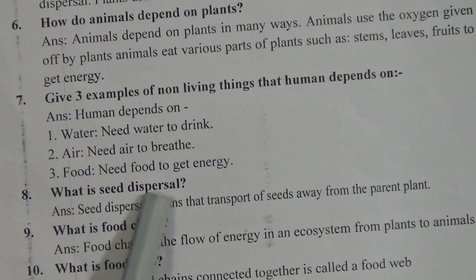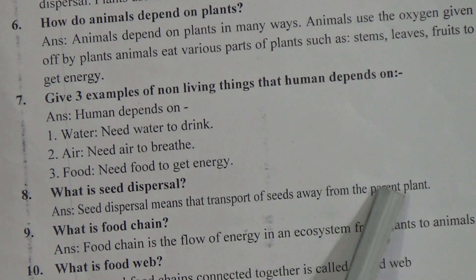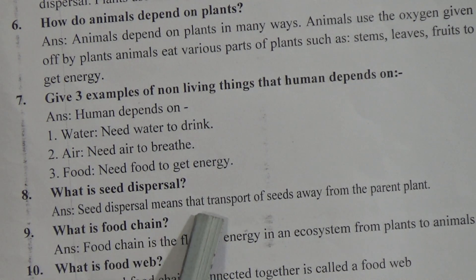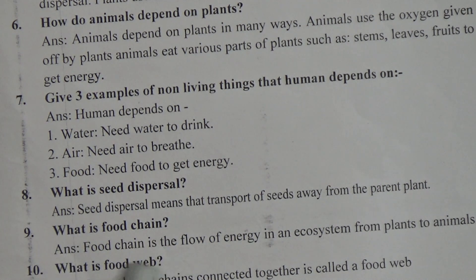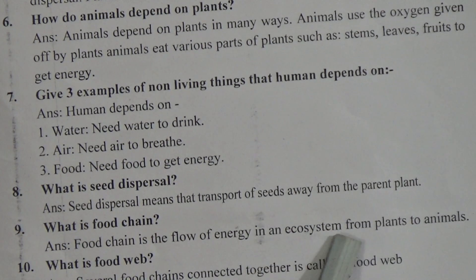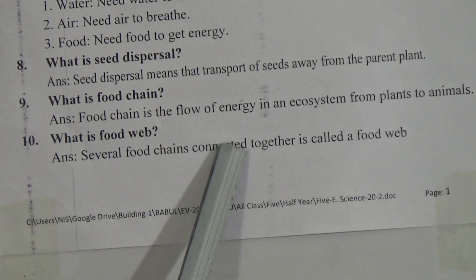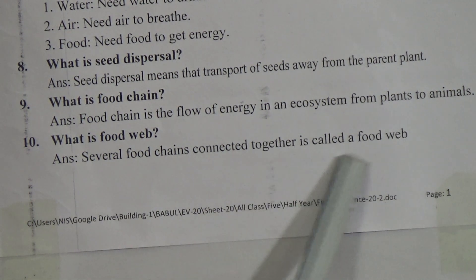Short question number 8: What is seed dispersal? Seed dispersal means the transport of seeds away from the parent plant. Short question number 9: What is food chain? Food chain is the flow of energy in an ecosystem from plants to animals. Short question number 10: What is food web? Several food chains connected together is called a food web.